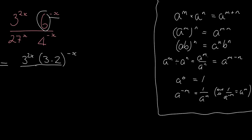Again, what I write in place of the 27, 27 is 3 cubed. So 27 is 3 cubed and that's to the power of x because it was 27 to the x. So it must be 3 cubed to the x. And again, what's 4? 4 is 2 squared and that's to the power of minus x.